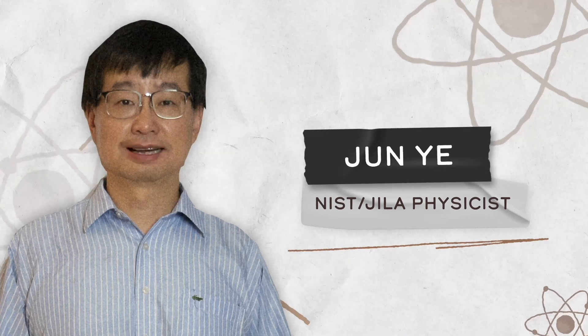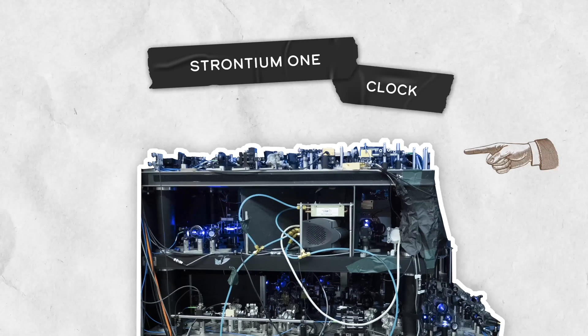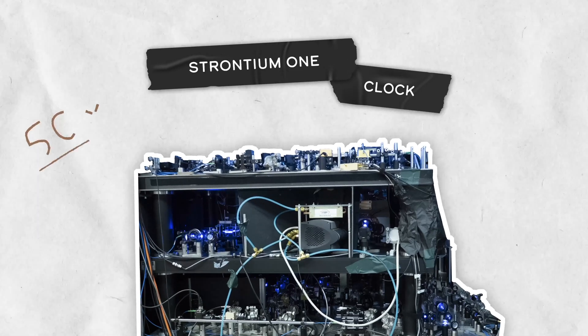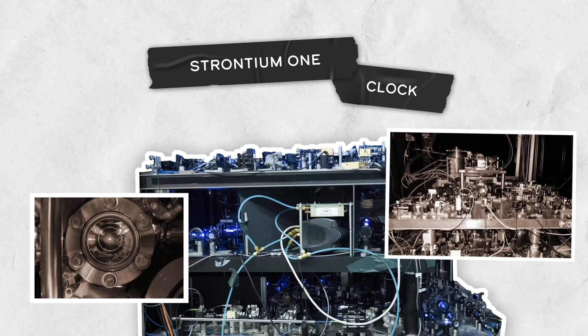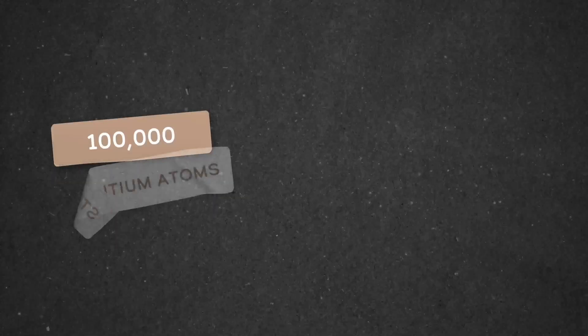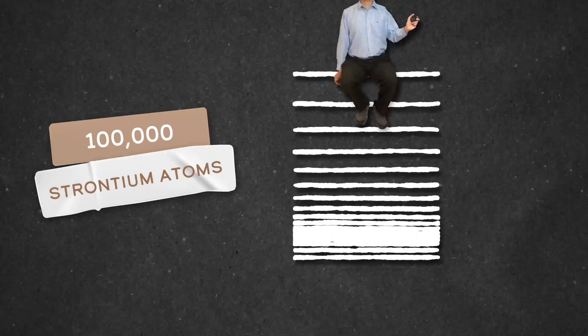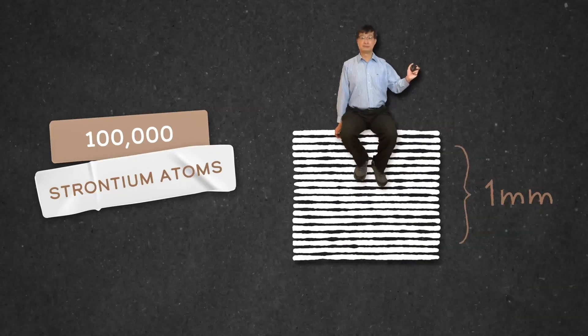I love playing with lasers and atoms. This is a strontium-1 clock. This clock is 50 times more precise than our previous clocks, which holds the world record. Inside the clock are 100,000 strontium atoms, layered like a stack of pancakes about a millimeter high.